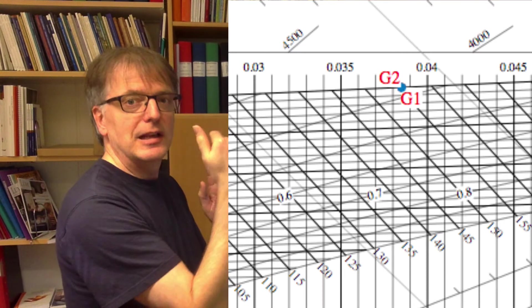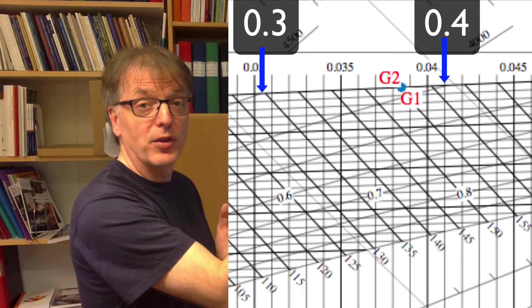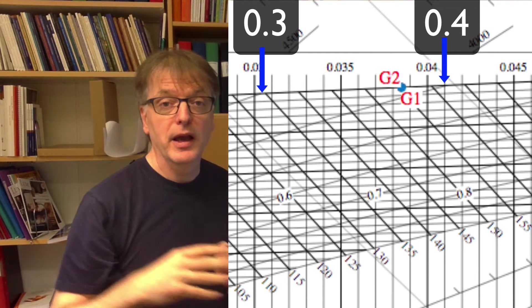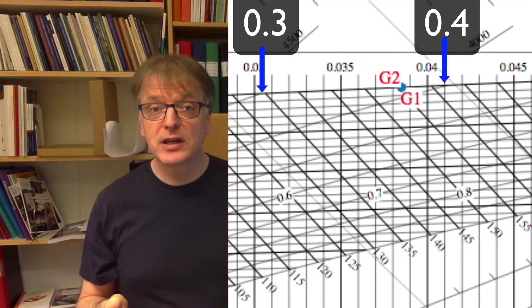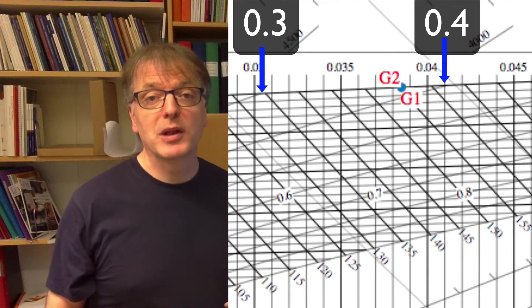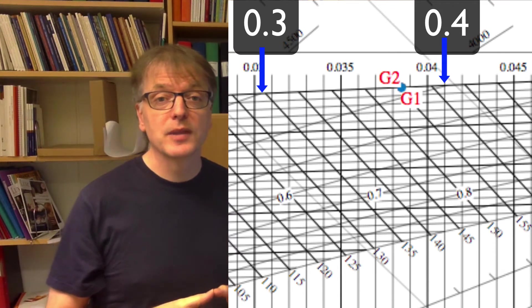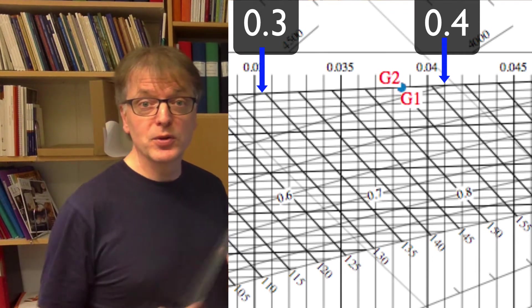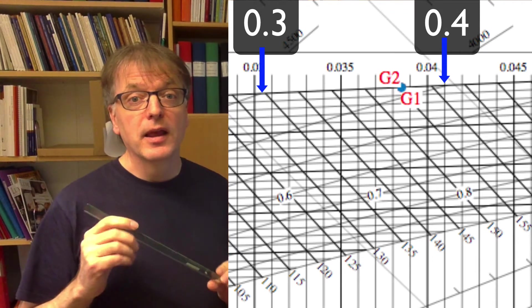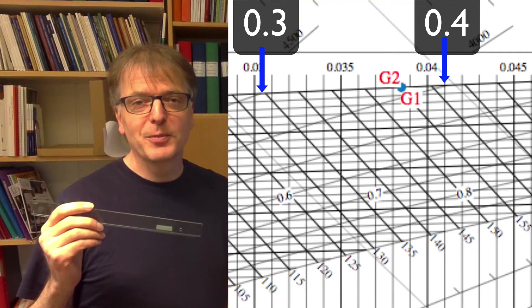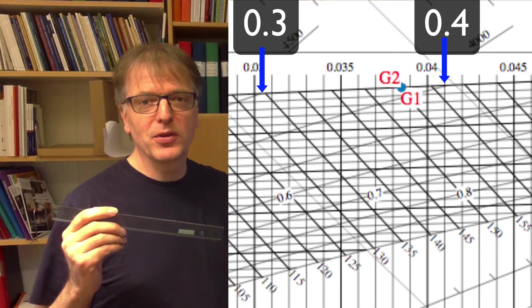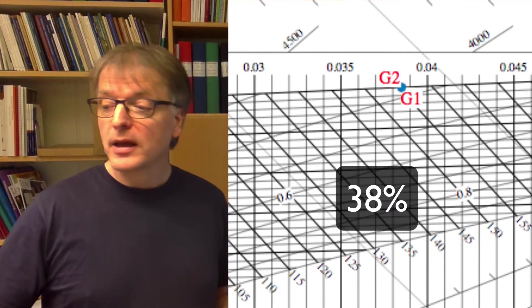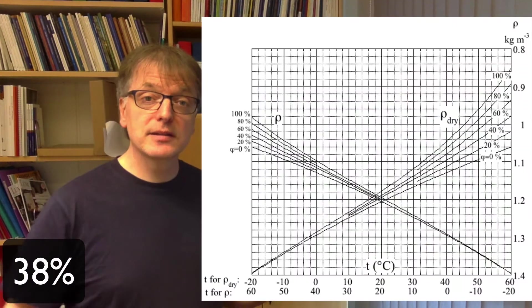And it's clearly a lot more than 0.3, so a lot more than 30 percent, but less than 0.4. And as I explained in another screencast, you can interpret that linearly if you have small x values. And you see here in the diagram, if you pick up your ruler again, that the point is about 80 percent of the way from 0.3 to 0.4. So we have 38 percent relative humidity.